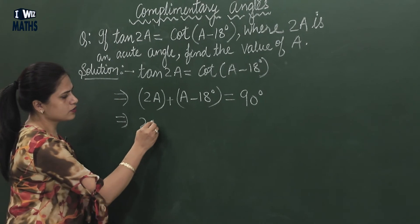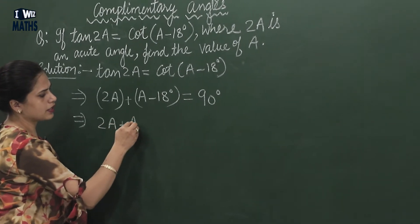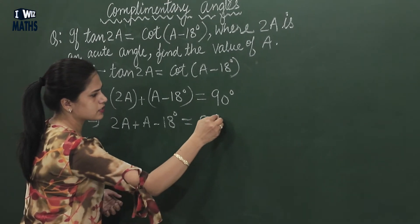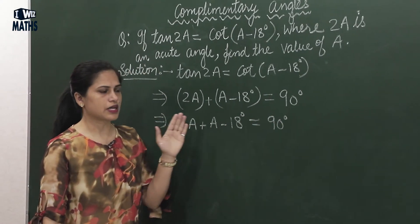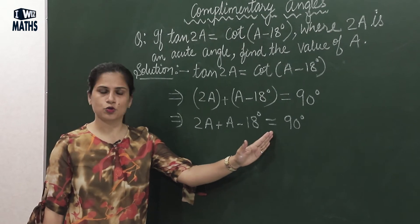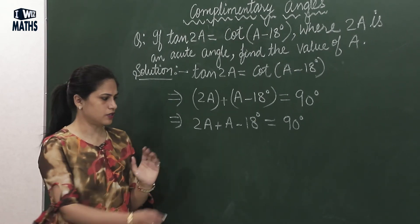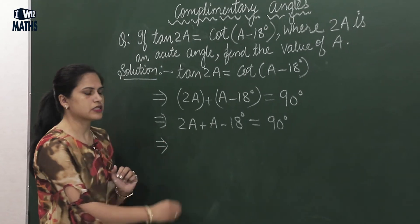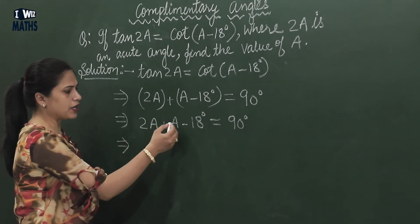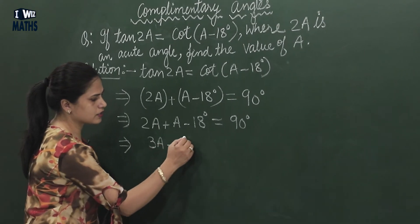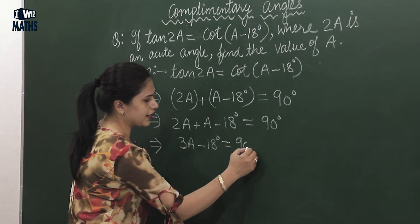And now we need to solve this further. How will we solve? 2A + A - 18° equals 90°. Remember, when in any of our steps there's already an equal sign, we call it an equation, and an equation starts with the implies sign. So every time we need to give the implies sign here. 2A plus A will be 3A - 18° equals 90°.